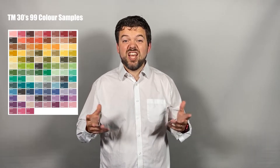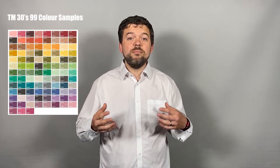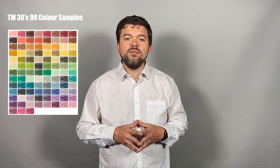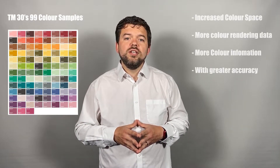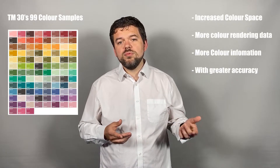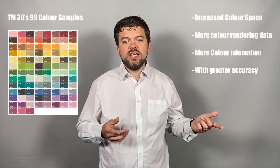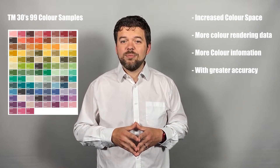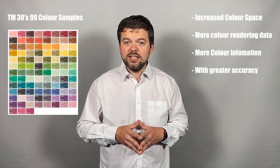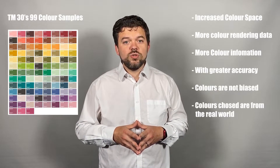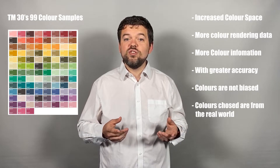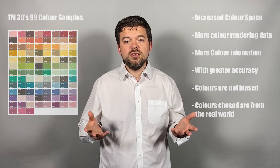TM30's 99 samples give much more uniform coverage of the colour space. Using 99 samples instead of 8 or 15 gives many more colour data points and more accuracy. The colours chosen also provide an unbiased colour test using real-world colours.